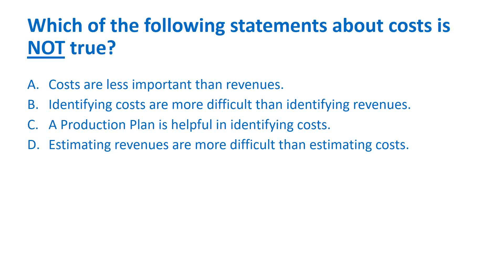The correct answer is A. Costs are not less important than revenues — they are equally important, since profit is revenues minus costs. Identifying costs is more difficult than identifying revenues — that is true. Estimating cost is easier once identified, but spotting or identifying the costs is harder. The production plan is helpful in identifying costs. Estimating revenues — particularly demand — is more difficult than estimating costs. So A is the correct answer: it is not true that costs are less important.